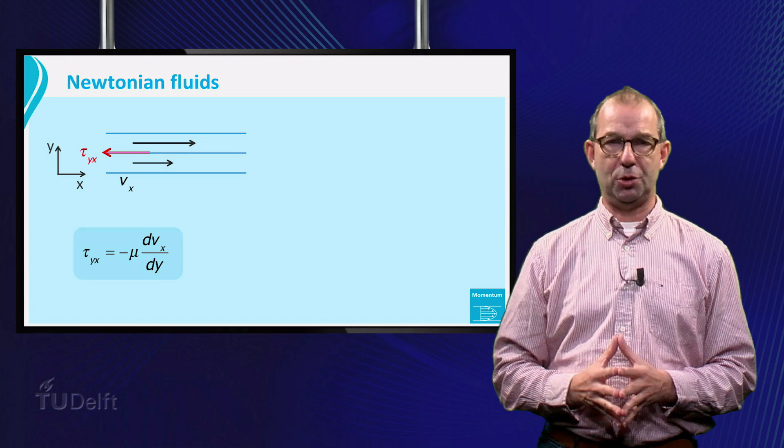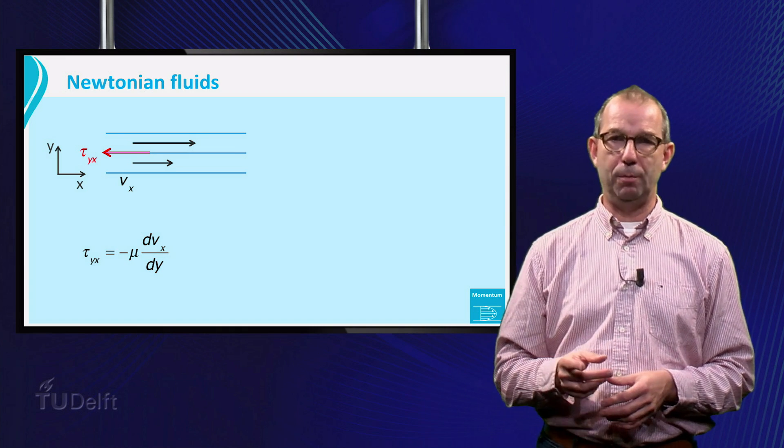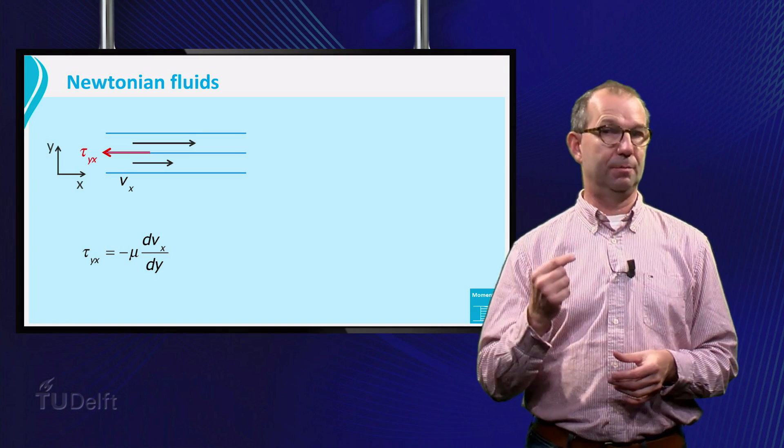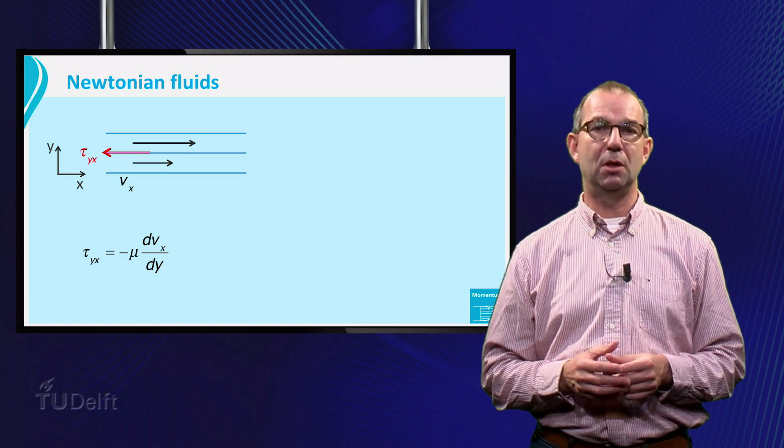For simple fluids like water, air, or syrup, the relation between tau, the friction force per unit area, and the velocity difference is linear. Tau sub yx equals minus mu dVx dy.